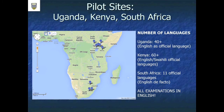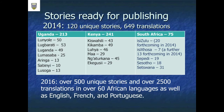We've been working in different countries — in Uganda, Kenya, and South Africa. Interestingly, all those countries have English as an official language, but in fact there are many languages spoken: 40-plus in Uganda, 60-plus in Kenya, and 11 official languages in South Africa. Note, however, that all examinations are in English. In 2014, we had 120 unique stories with 649 translations. Now, because of the power of the digital, we have over 500 unique stories and over 2,500 translations in over 60 African languages, as well as English, French, and Portuguese.